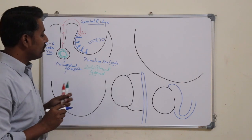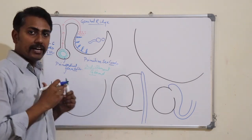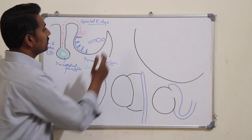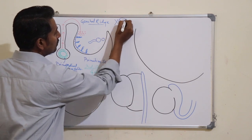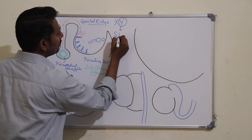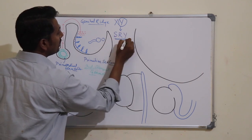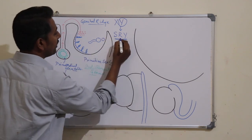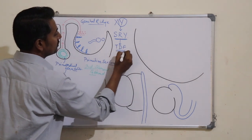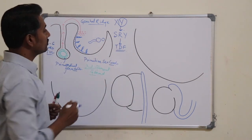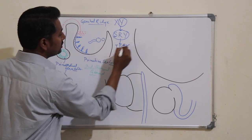The further development of this indifferent gonad depends upon the Y chromosome. If the Y chromosome is present — that is, the genotype is male — the Y chromosome has a sex-determining region known as the SRY gene, which produces a factor known as the testis-determining factor. Under the influence of this SRY gene producing the testis-determining factor, the primitive sex cords will continue to develop.